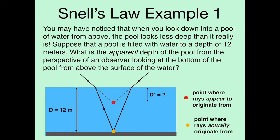Hi everybody, welcome back. What we're doing today is finishing up our chapter 32 lecture on reflection and refraction of light. What we touched on last time at the end of the previous video was Snell's Law. Snell's Law is an equation that describes how light refracts — how it bends as it goes from one material to another. So let's start off this video with an example where we get to put Snell's Law to use.